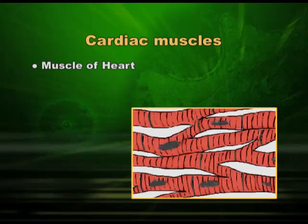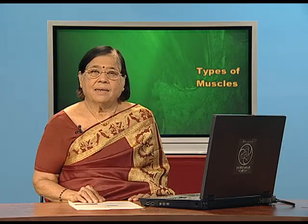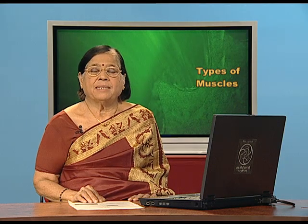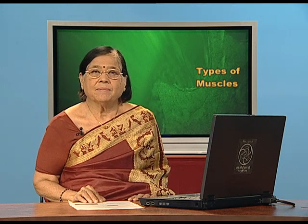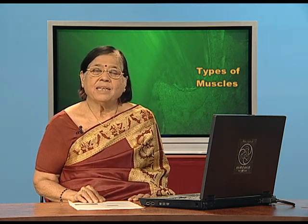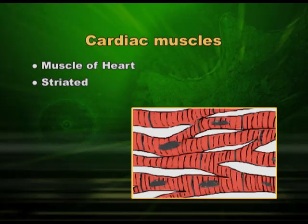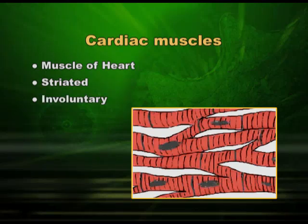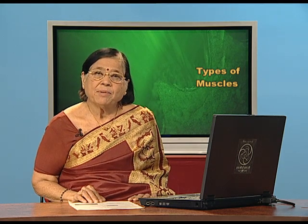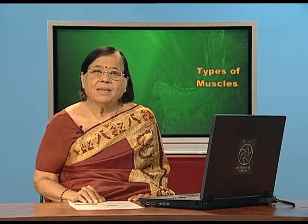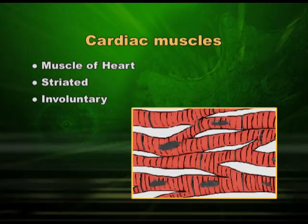The heart muscle is very very different from other muscles. Cardiac muscle is different from both skeletal muscle and smooth muscle. If you see it under a microscope it looks striped, so we can call it striped muscle — but it is involuntary, whereas skeletal muscle which was striped was voluntary. So heart muscle is involuntary — that is one point. It is striped — that is a second point. And the third most important point is it is branched.